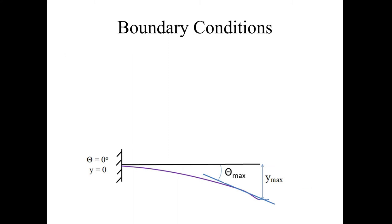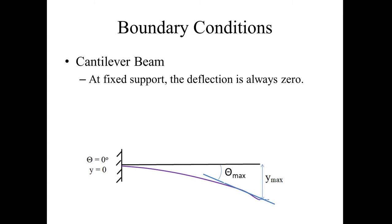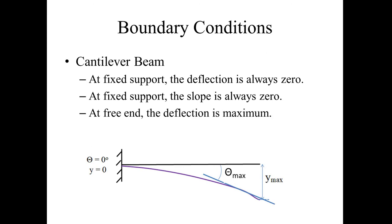For boundary conditions of a cantilever beam: at the fixed end, theta equals zero and Y equals zero. At the free end, deflection is maximum (Y is maximum) and slope is maximum (theta is maximum). So at the fixed support deflection is always zero and slope is always zero, while at the free end both deflection and slope are maximum.